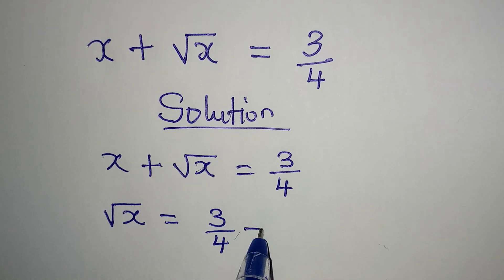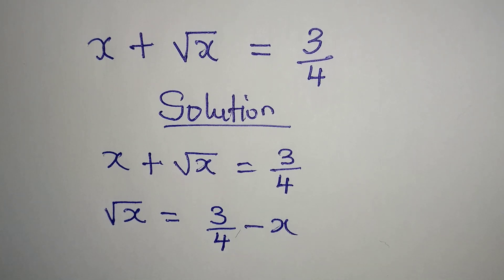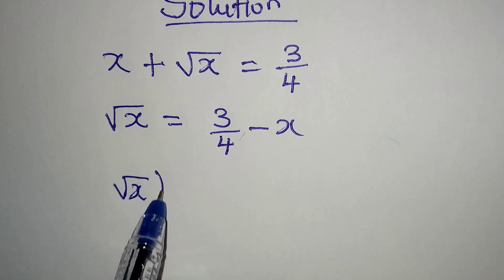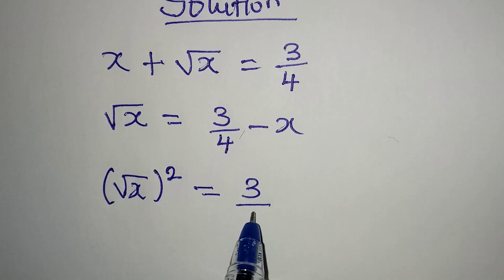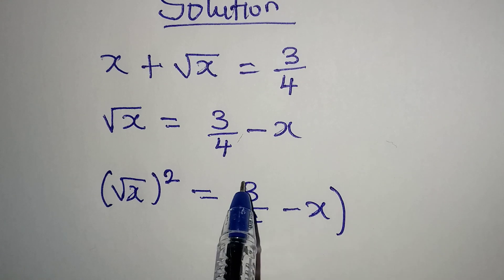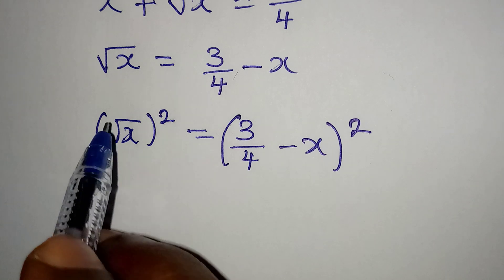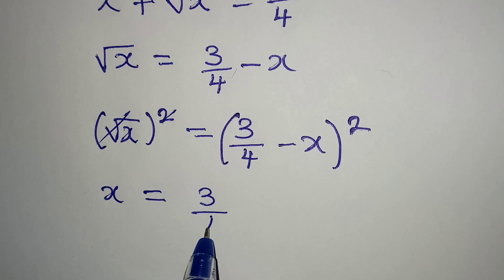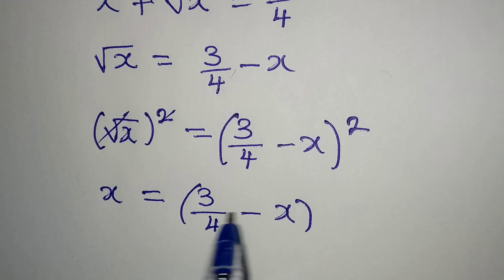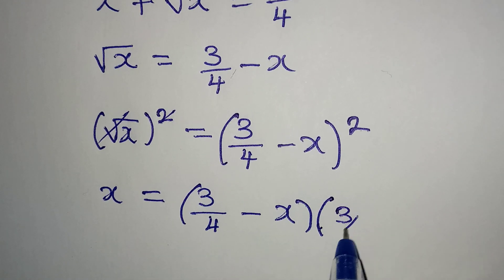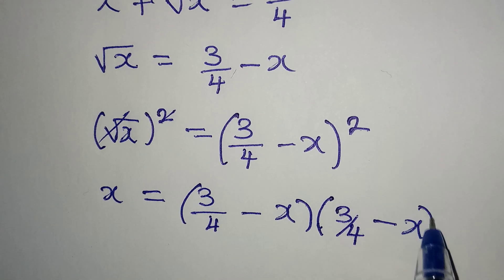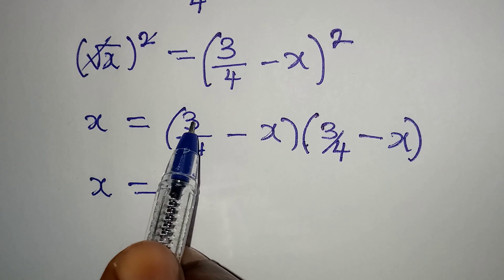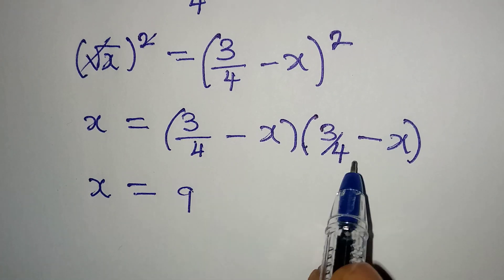The next thing is to square both sides, so we have square root of x squared equal to 3 over 4 minus x, and that quantity is squared. This gives us x equal to 3 over 4 minus x, times 3 over 4 minus x.